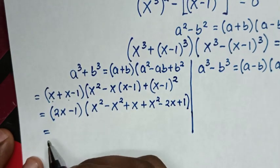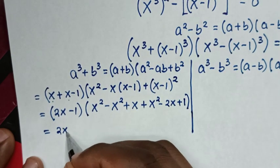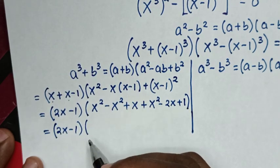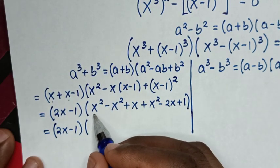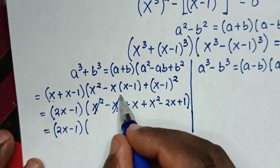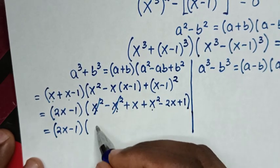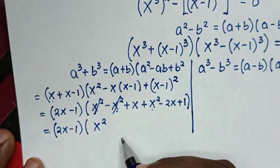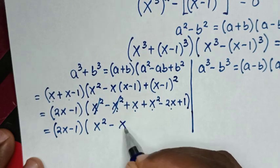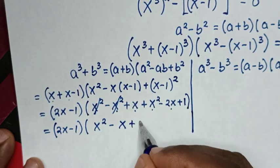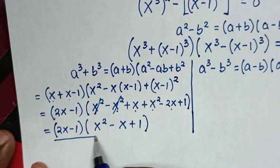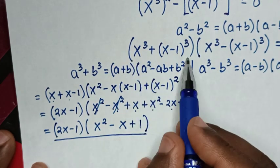Then simplifying: x² minus x² cancels, leaving (2x minus 1)(x² minus x plus 1). So we substitute this simplified form for the first part.